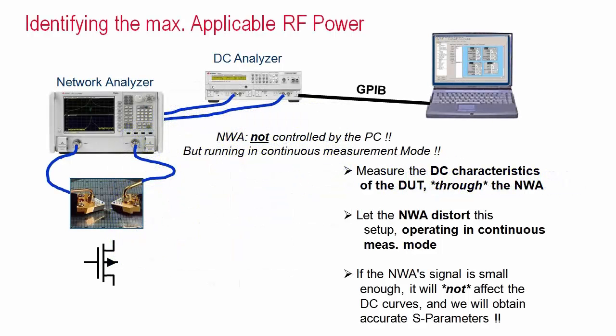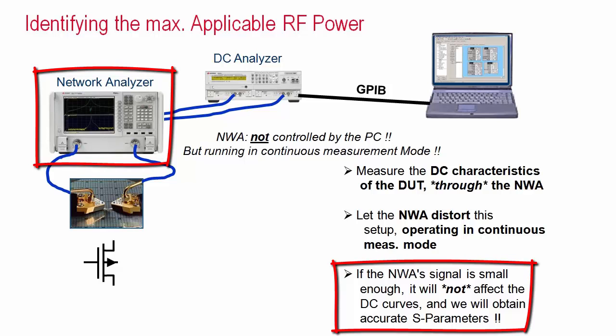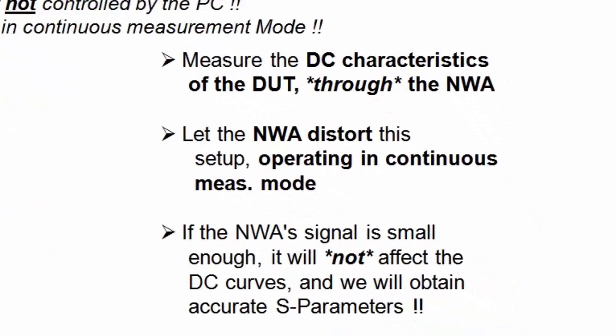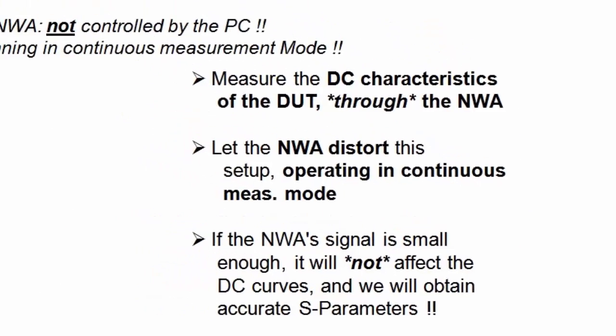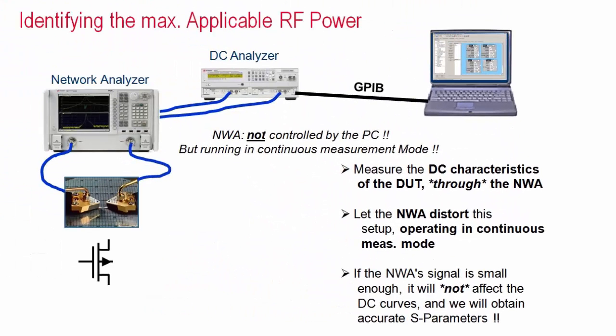We then increment the network analyzer's signal power manually, step by step, and measure again the output curve. As long as the analyzer's testing level is small enough, it will not disturb the measurement and we will obtain accurate S-parameters later. If it's too big, our S-parameter results will be wrong.